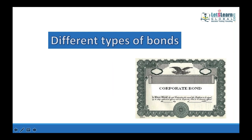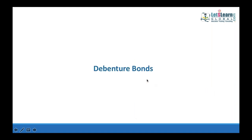Today we'll discuss the different types of bonds issued by a corporate — what advantages the corporate and investor get. Debenture bonds, also called debentures, are bonds where no asset is given as collateral. When a corporate is not giving any asset as collateral, the bond is subject to risk.